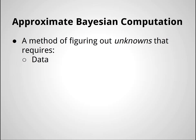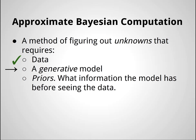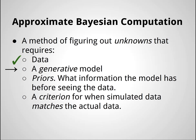Approximate Bayesian computation is a method for figuring out unknowns — often called parameters when you do statistical modeling. It requires: one, data, and we have data, tiny data, so check on that. Two, it requires a generative model — any type of method or function that you can feed fixed parameter values and it will generate fake data for you. We also need priors — what the model has before seeing the data. And finally we need a criterion for when the simulated data from our generative model matches the actual data.